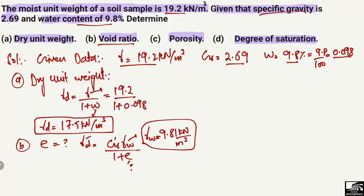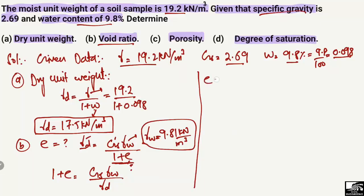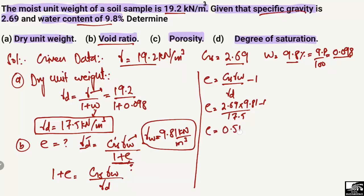Rearranging the equation, 1 plus e equals Gs times gamma_w divided by gamma_d, so e equals Gs times gamma_w divided by gamma_d minus 1. Putting in the values: Gs is 2.69, gamma_w is 9.81, dividing by gamma_d of 17.5 minus 1, e comes out to be 0.51. This is the void ratio for this soil sample.